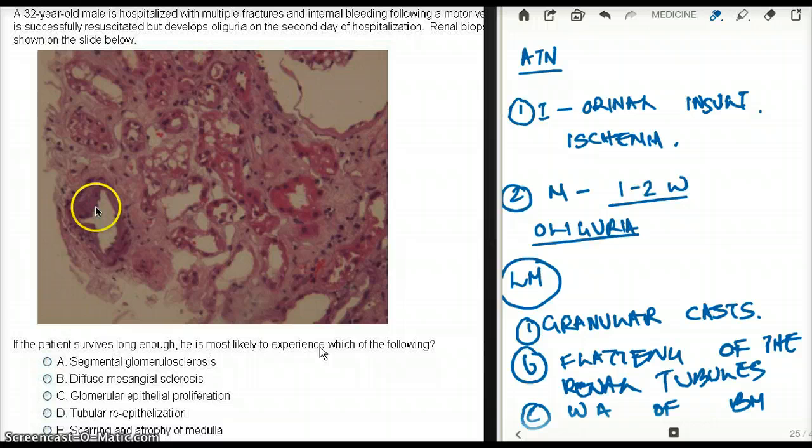There is also going to be flattening of the renal tubules and wearing away of the basement membrane. So, you can see how the basement membrane, the epithelium is kind of gone. So, there is going to be wearing away of the basement membrane. You should also be able to see granular casts. Maybe this is a granular cast. I'm not so sure. But, you should be in a bigger magnified picture. You should be able to see granular casts as well in the oliguric phase or the maintenance phase.